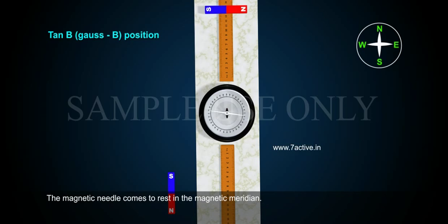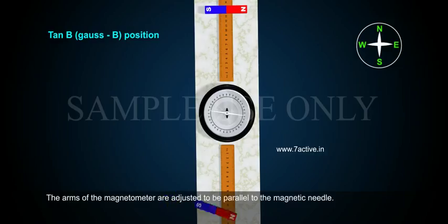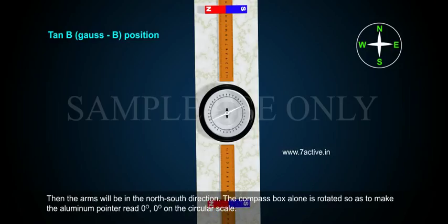The magnetic needle comes to rest in the magnetic meridian. The arms of the magnetometer are adjusted to be parallel to the magnetic needle. Then the arms will be in the north-south direction. The compass box alone is rotated so as to make the aluminum pointer read 0 degree, 0 degree on the circular scale.